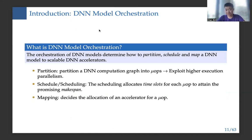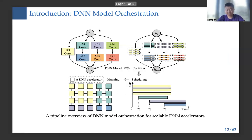So what is DL model acceleration? It says that we determine how to partition, schedule, and map the DL model to scalable DNN accelerators. Specifically, partition means we partition the DL computation graph into μOPs. Because of the partitioning, we can exploit higher execution parallelism. For scheduling, we decide time slots for each μOP to attain a promising makespan. For mapping, we decide the allocation of accelerators for each μOP. This figure gives the overview of DL model acceleration.